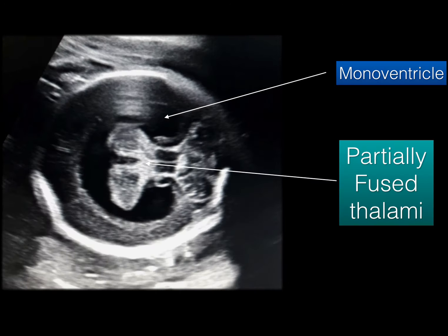A 23-year-old pregnant lady came for an anomaly scan. Let us see the USG features. This is the axial section of ultrasound of the fetal brain. You can see the classic bilateral thalami which are partially fused here, and you can see the ventricle is single, which is called a monoventricle.